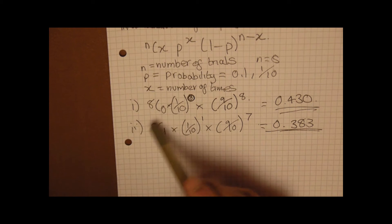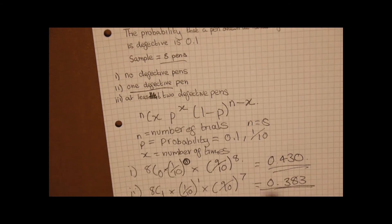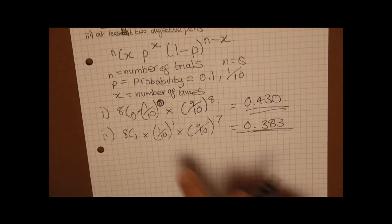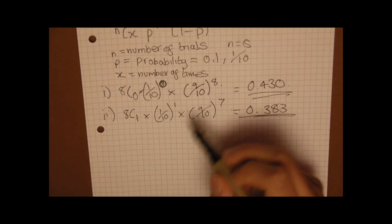So just to rephrase on that question: what we've done is we've done 8C but instead of using 0, because 0 was our number of trials in the first question, we've used 1. As it says in the second question you need one defective pen, so we've only got 1 trial. And therefore it's times 1 over 10 to the power of 1 and then times 9 over 10 to the power of 7, because x and n minus x must add up to make n.